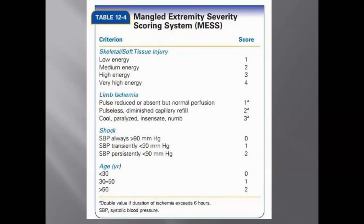The third component is shock — when systolic blood pressure is more than 90, score is 0; transiently less than 90 scores 1; persistently less than 90 scores 2. The last component is age — less than 30 years scores 0, 30 to 50 scores 1, more than 50 scores 2. If the total MESS score is less than 6, the limb is salvageable; 7 or more is an indication for amputation.